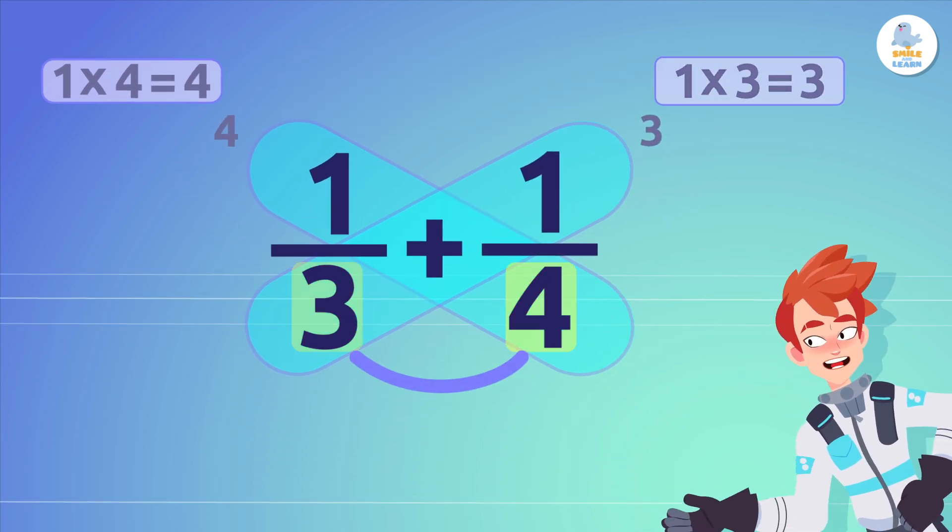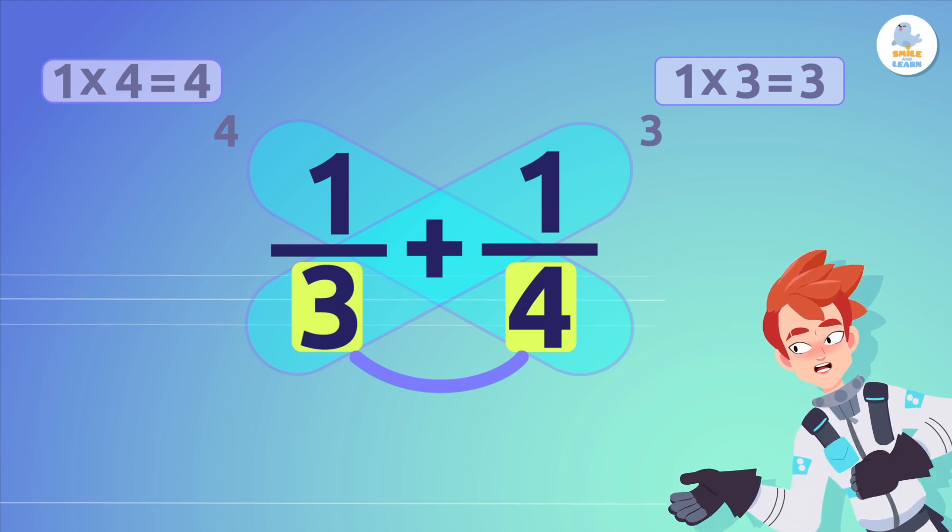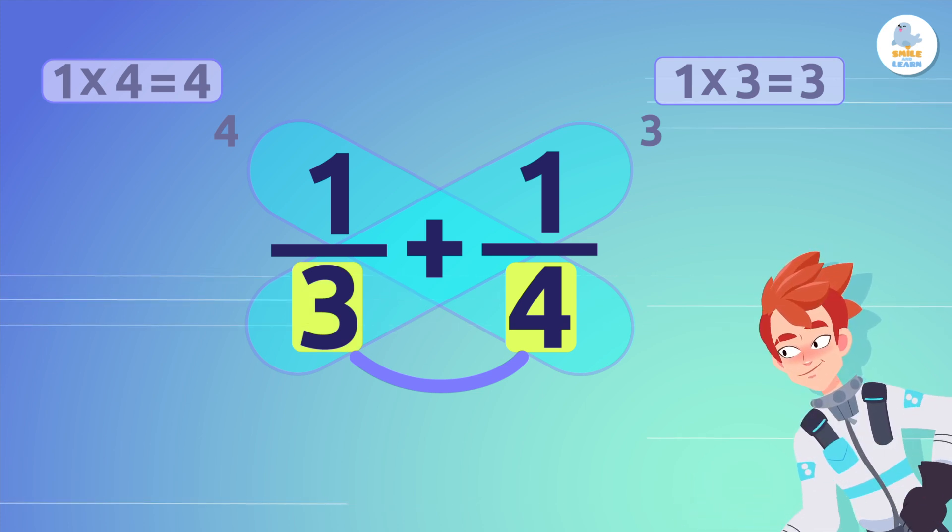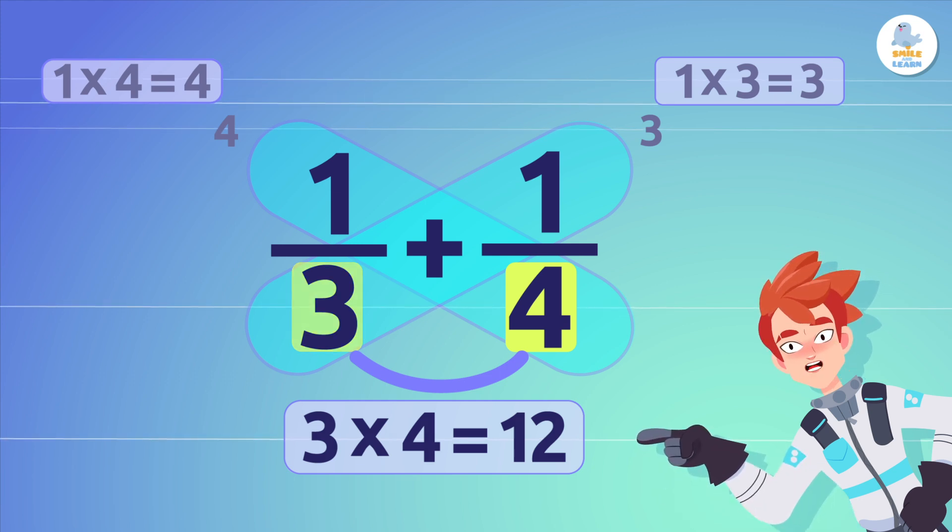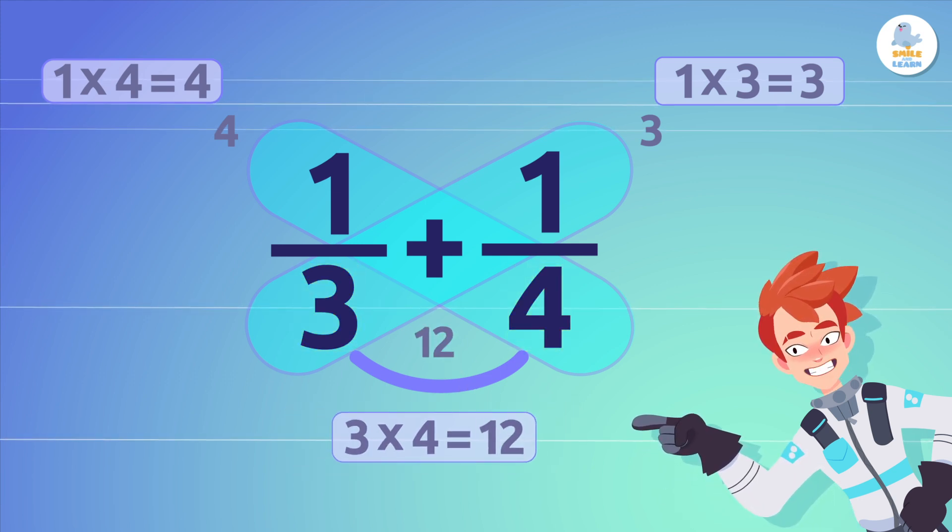Then, we multiply the denominators to get the base of our butterfly. In this case, 3 times 4 is 12, which is the denominator of our answer.